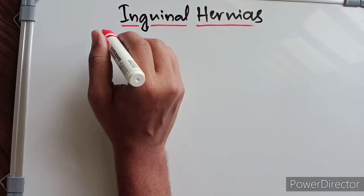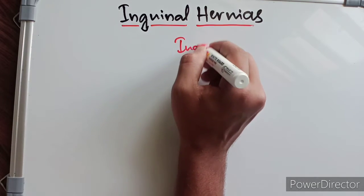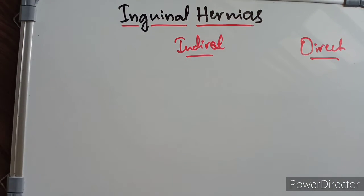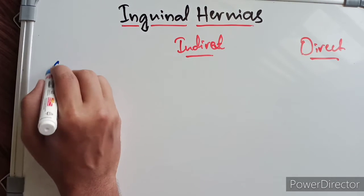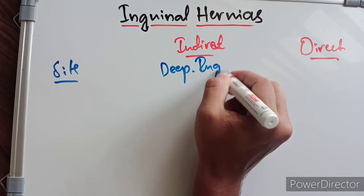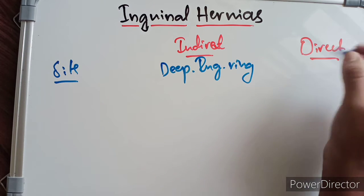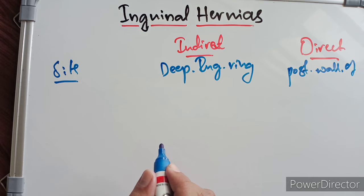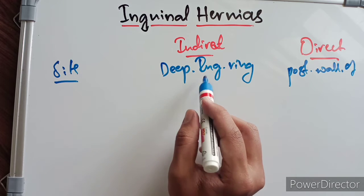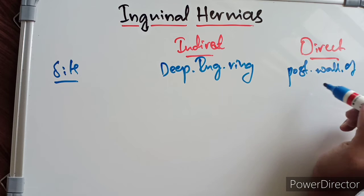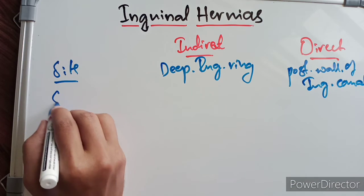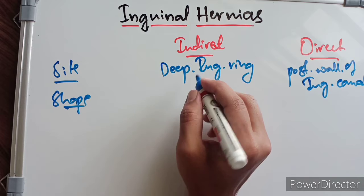Now let's look at the differences between indirect and direct inguinal hernias, which is a major topic in university exams. Regarding the site: the indirect inguinal hernia enters through the deep inguinal ring, whereas the direct inguinal hernia goes through the posterior wall of the inguinal canal. Regarding shape: the indirect inguinal hernia is pear-shaped, whereas the direct inguinal hernia is globular.